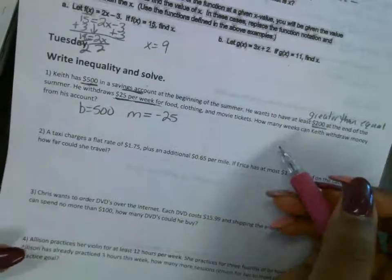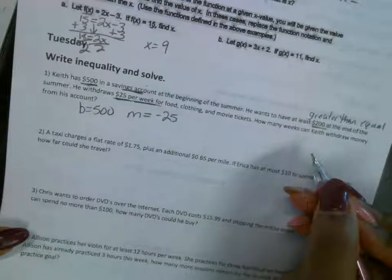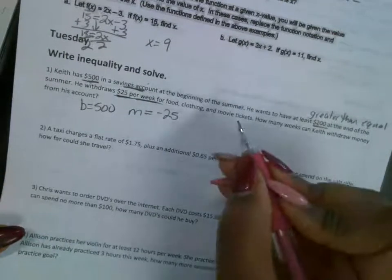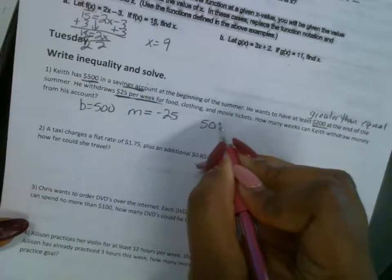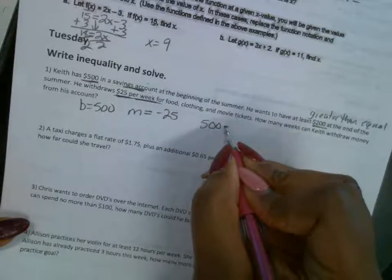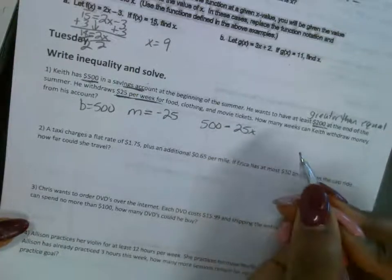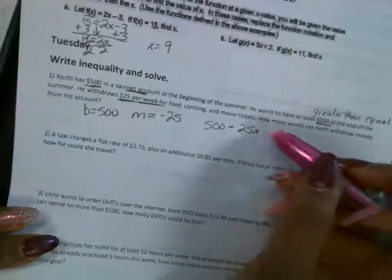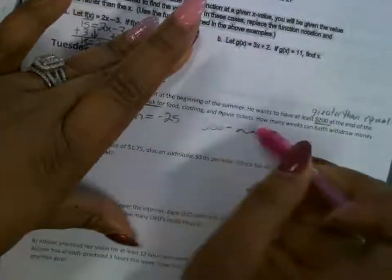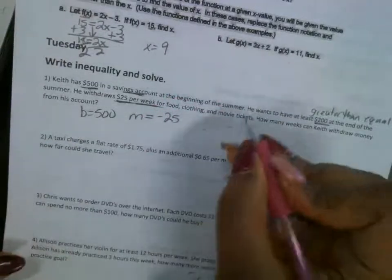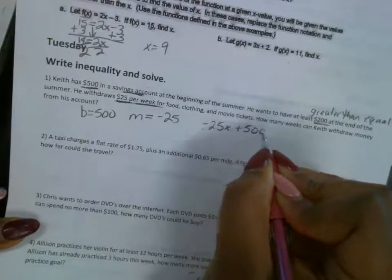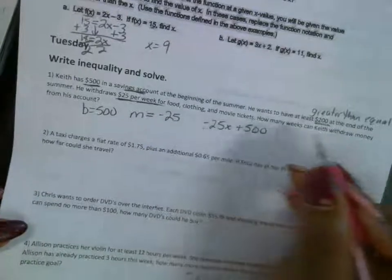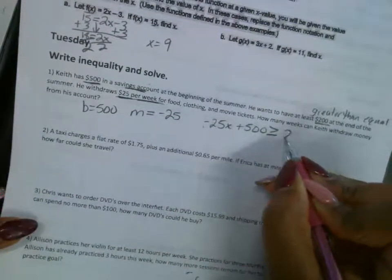So let's write the equation first. The equation is going to be that he starts off with $500, then minus $25, or you can write it as negative $25x plus $500. Either way, y equals mx plus b, negative $25x plus $500. And this amount right here has to be greater than or equal to the $200.